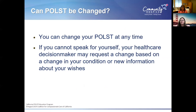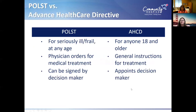You can change your POLST at any time. If you cannot speak for yourself, your healthcare decision maker may request a change based on a change in your condition and new information about your wishes. If something changes with my health and my daughter knows I wanted certain things changed, she can speak on my behalf and we can proceed by the new information she knows about what I do and don't want. In summary, the POLST is for seriously ill and frail individuals at any age — it's a physician's order for medical treatment. An advanced healthcare directive is for anyone 18 and older, providing general instructions and appointing a decision maker. They're both legal documents, but the POLST is a physician order.